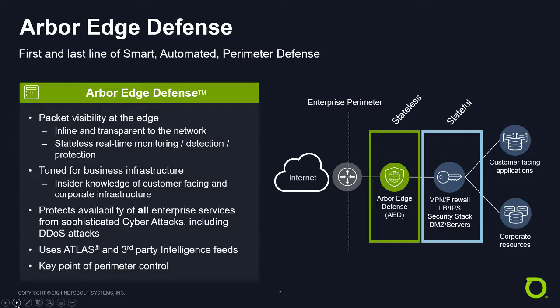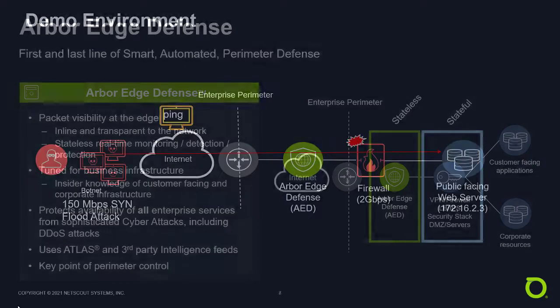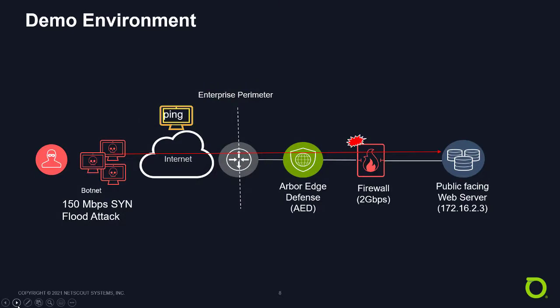In this demonstration, we're going to show you how Arbor Edge Defense can protect a firewall from a state exhaustion attack. Here's our demo environment: we have a fictitious network setup. The left side is the internet router — we're going to call it the enterprise perimeter.